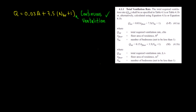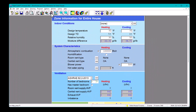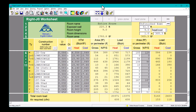Let's do this calculation quickly. Q equals — what is our area? This is the conditioned area. You're going to already have that value; usually the architect provides it, or you find it in the drawings. In RightSoft, for example, you find it in the worksheet for the entire house. It says room area: 1793.8 square feet.